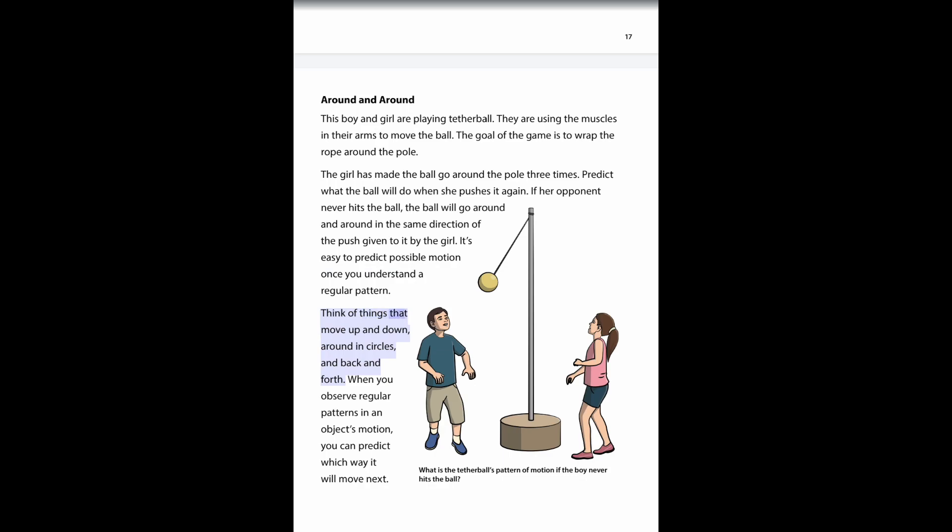Think of things that move up and down, around in circles, and back and forth. When you observe regular patterns in an object's motion, you can predict which way it will move next. What is the tetherball's pattern of motion if the boy never hits the ball?